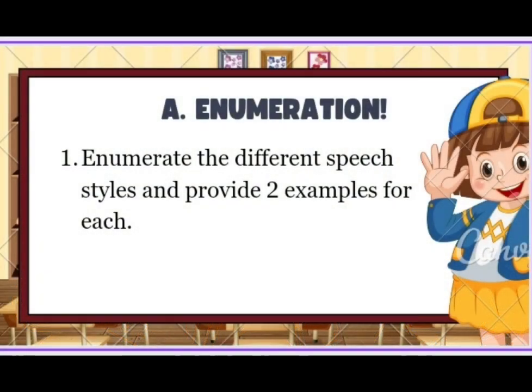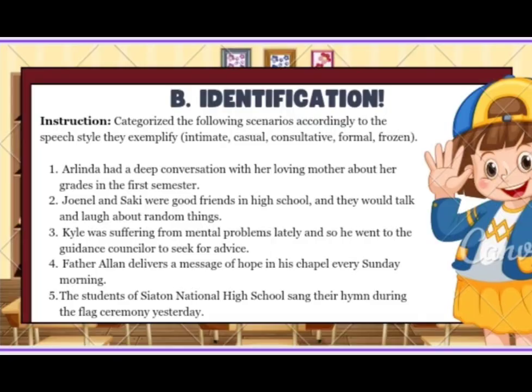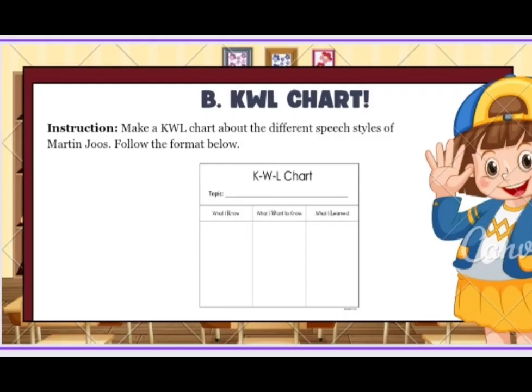I can sense that this class has gained enough understanding of our topic today. But in order to gain more knowledge, let us answer these three sets of items. For the first one, we have enumeration. For the second one, identification. The third one is the KWL chart. For the enumeration and identification, you can have it written on a one-half sheet of paper, and for the KWL chart, you can place it on bond paper. Alright, time is up. Pass your paper in the center aisle and I will be the one to check this.